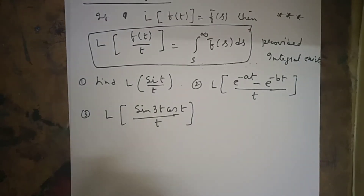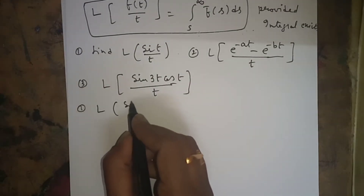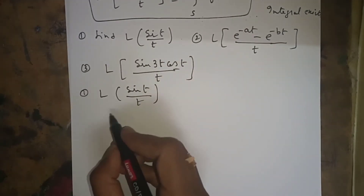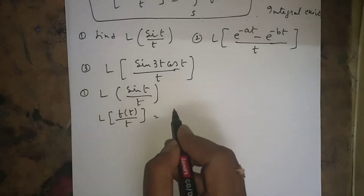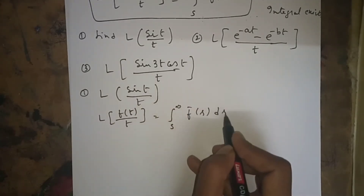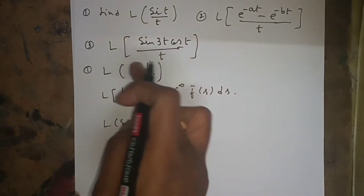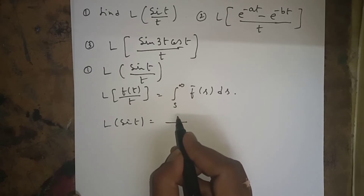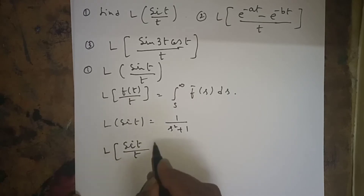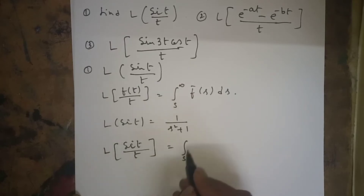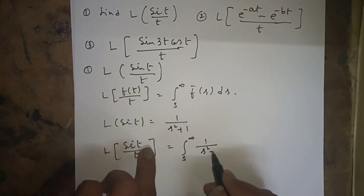We have a few problems. The first is L{sin(t)/t}. We write the formula: L{f(t)/t} = ∫_s^∞ F̄(s) ds. First, find L{sin(t)} = 1/(s² + 1). Then L{sin(t)/t} = ∫_s^∞ [1/(s² + 1)] ds.